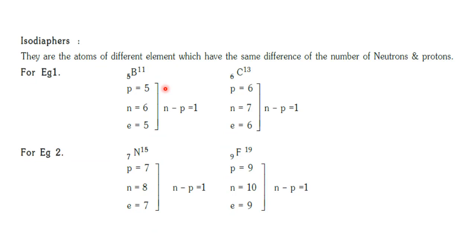Isodiaphers are atoms of different elements which have the same difference between their number of neutrons and protons. When you calculate the number of neutrons minus the number of protons, and if two elements have the same value for that difference, we call them isodiaphers. For example, boron-11 (atomic number 5) and carbon-13 (atomic number 6) — the difference between neutrons and protons for both is 1.